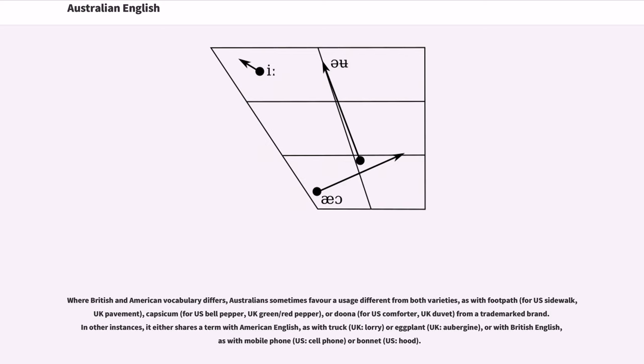Where British and American vocabulary differs, Australians sometimes favor a usage different from both varieties, as with footpath for US sidewalk or UK pavement, capsicum for US bell pepper or UK green/red pepper, or doona for US comforter or UK duvet, from a trademark brand. In other instances, it either shares a term with American English, as with truck versus UK lorry, or eggplant versus UK aubergine, or with British English, as with mobile phone versus US cell phone, or bonnet versus US hood.